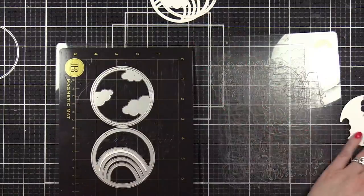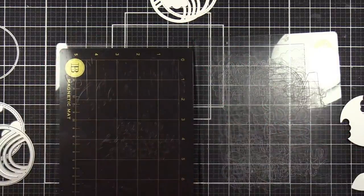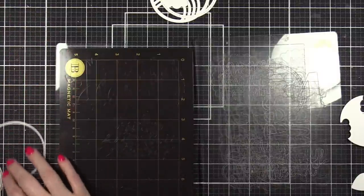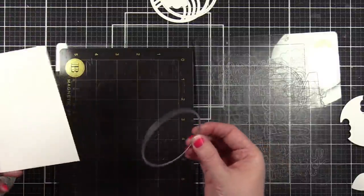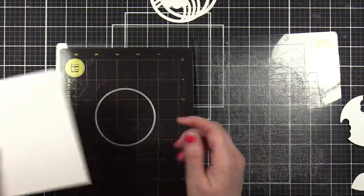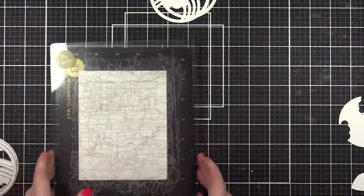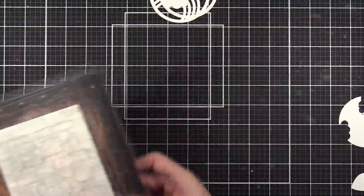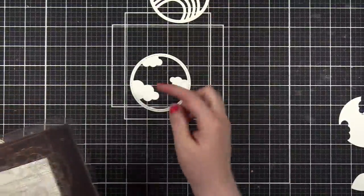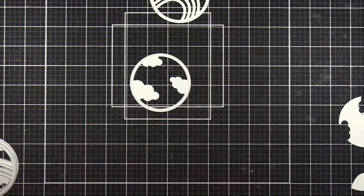We need one more white circle, so I'm gonna use that additional circles die set. I'm gonna be using this size right here. I've already sized it out—it's just slightly smaller than the circle frame we've got going here, and that's the one I can put on the back.